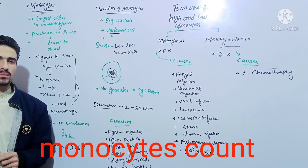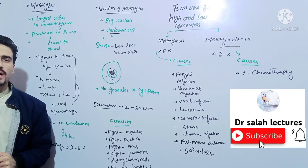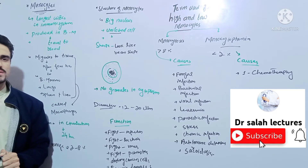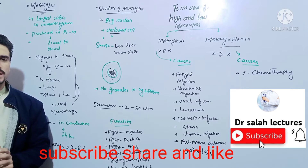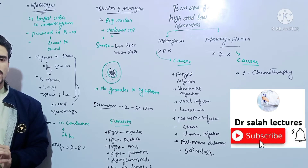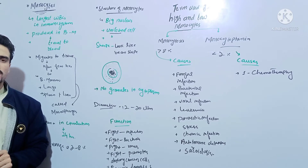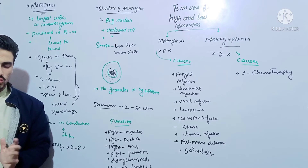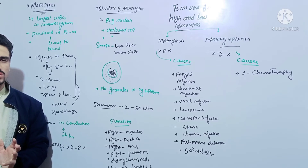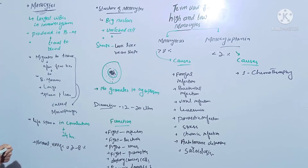Bismillahirrahmanirrahim. Assalamu alaikum viewers. Today our topic is about monocytes. In the previous lecture we have already studied about granulocytes like neutrophil, basophil, and eosinophil. Today our topic is about agranulocytes. Agranulocytes contain two types of cells: monocytes and lymphocytes, which have no granules, due to which they are called agranulocytes. Now we will discuss about monocytes.